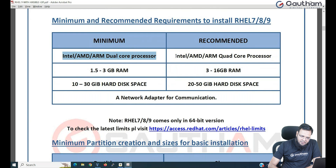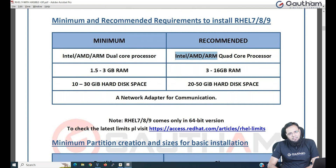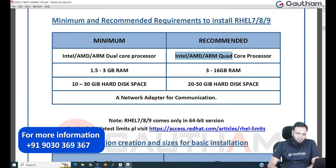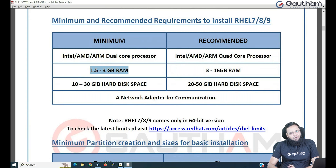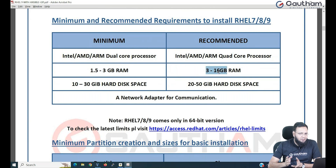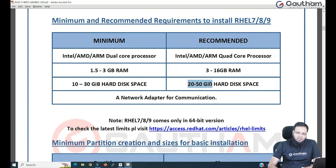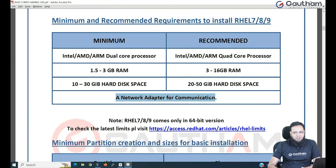That dual core is the minimum. For best results, you should go for Intel, AMD, or ARM quad core processor, which will be very fast in performance. When it comes to RAM, you should have a minimum of 1.5 to 3 GB; recommended is 3 to 16 GB. Hard disk space required is 10 to 30 GB minimum, and recommended is 20 to 50 GB. Optionally, we should have a network adapter for best communication.